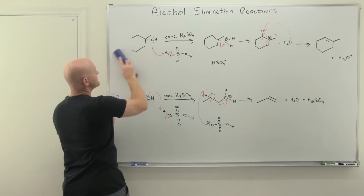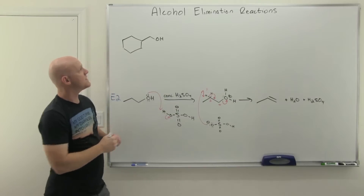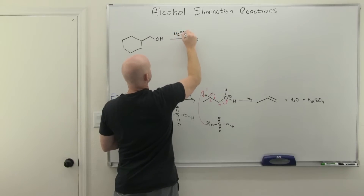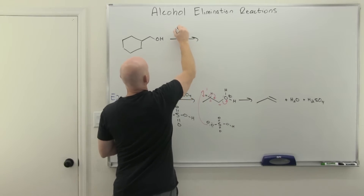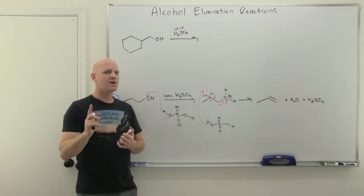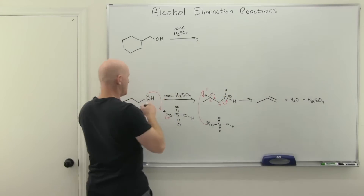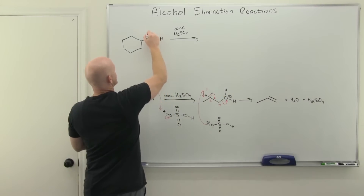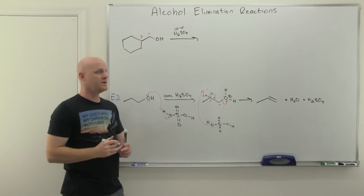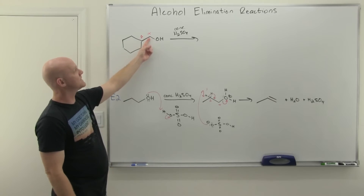Let's take a look at something similar but a little different. Say we start with this alcohol on a primary carbon and use concentrated H2SO4. On initial inspection, there's only one beta carbon, so it looks like the only possible alkene product is right there. And because it's on a primary carbon, we're not going to go through a carbocation intermediate — at least we don't think we are. So it appears there's only one elimination product possible via E2.